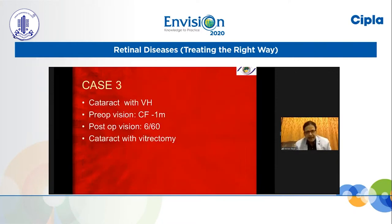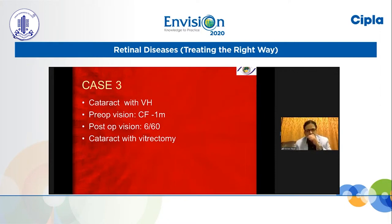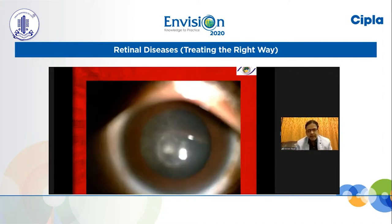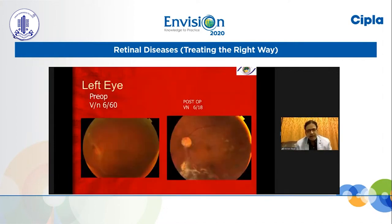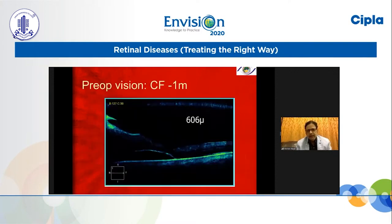Case 3: Cataract with vitreous hemorrhage. Preoperative vision counting fingers at 1 meter, postoperative vision 6/60. Cataract with vitrectomy was performed. There is significant cataract, significant vitreous hemorrhage, and also TRD. The left eye postoperative vision is 6/18 in this particular patient. You can see the preoperative and postoperative OCT as well.